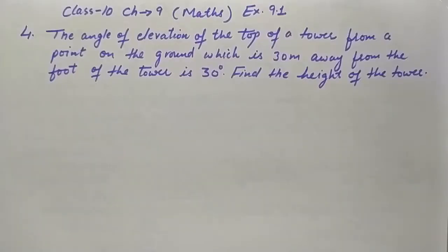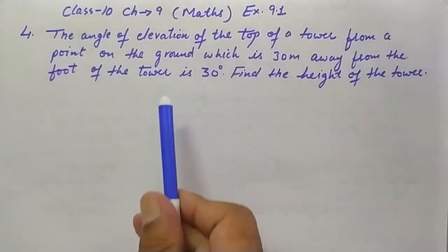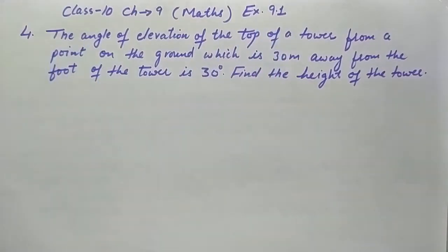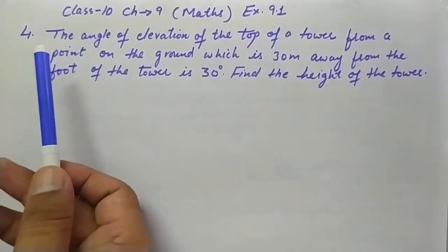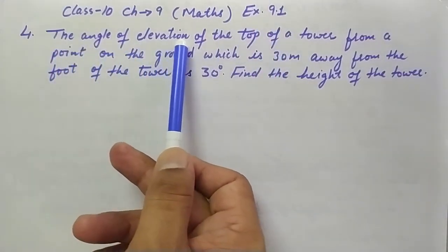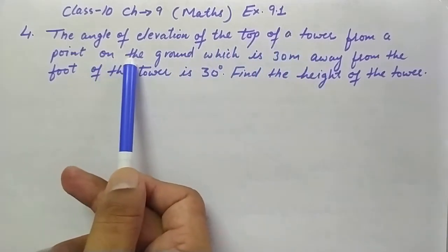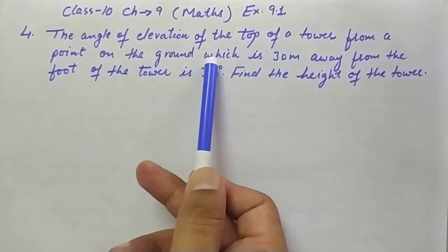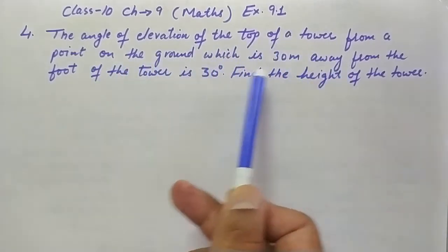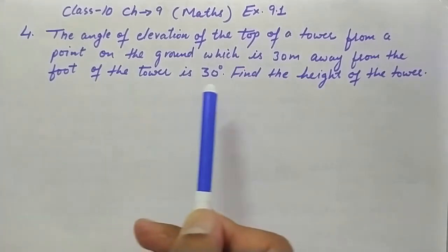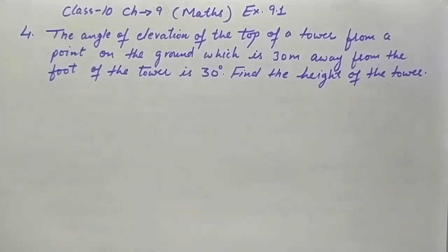This question is taken from Class 10, Chapter 9, Exercise 9.1, Question 4. The angle of elevation of the top of a tower from a point on the ground which is 30 meters away from the foot of the tower is 30 degrees. Find the height of the tower.